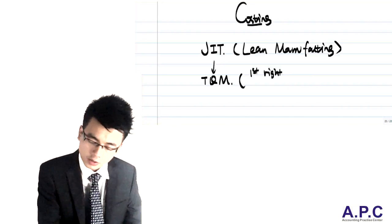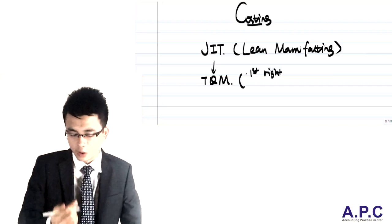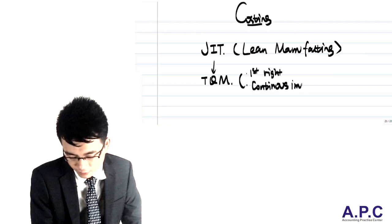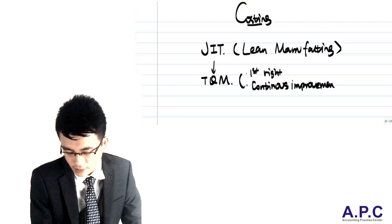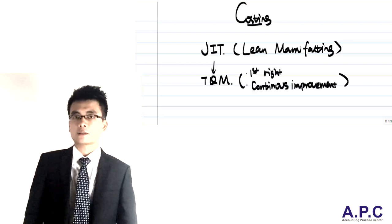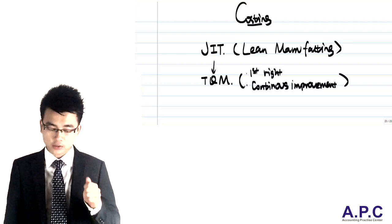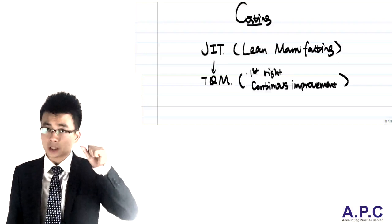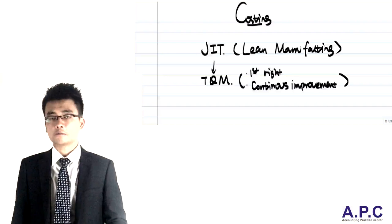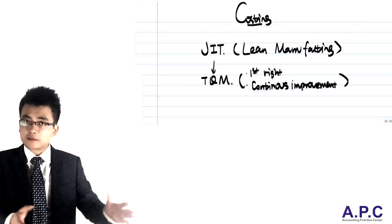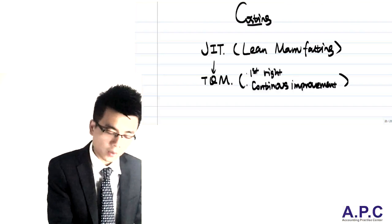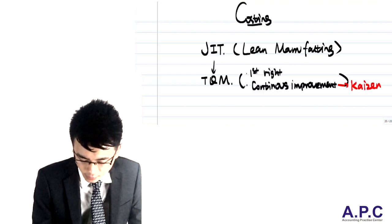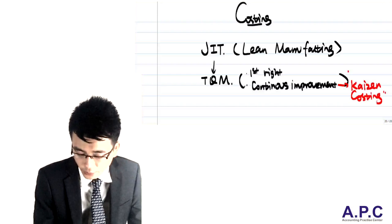TQM also says not just to do the first thing right, but also you need continuous improvement, because it believes that every business process can be improved. So what we're trying to do is continuously decrease costs for each of the processes. From that perspective, we're going to focus upon Kaizen costing when we come to it.